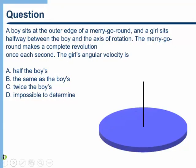Take a look at the following question: a boy sits at the outer edge of a merry-go-round, and a girl sits halfway between the boy and the axis of rotation. The merry-go-round makes a complete revolution once each second. The question is: what is the girl's angular velocity? Go ahead and pause the video and think this one out on your own.